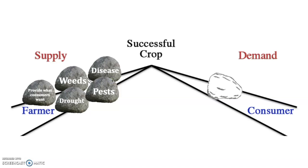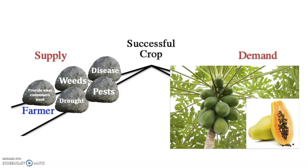Another challenge is that farmers need to provide what consumers want. So here are five examples of challenges that are faced as a farmer tries to create the supply that will lead to a successful crop. For example, papayas have been genetically modified because the GM version overcomes a specific disease that the papaya tree is susceptible to. That's why a papaya farmer might choose a GM variety.